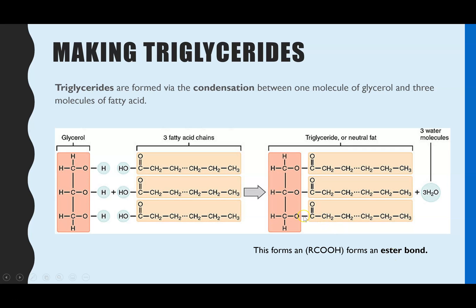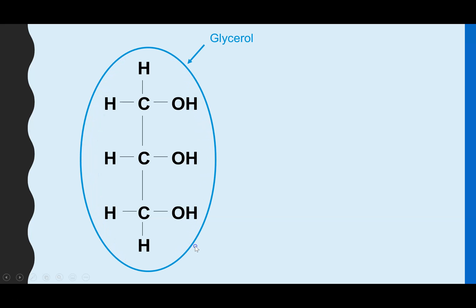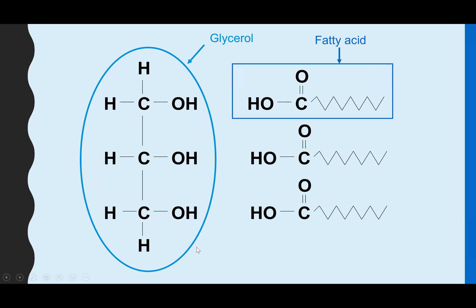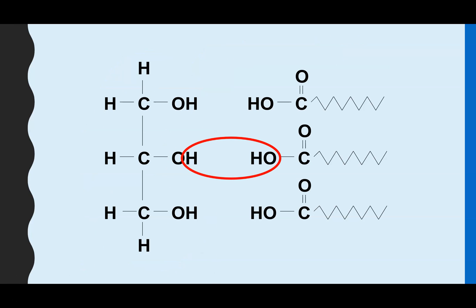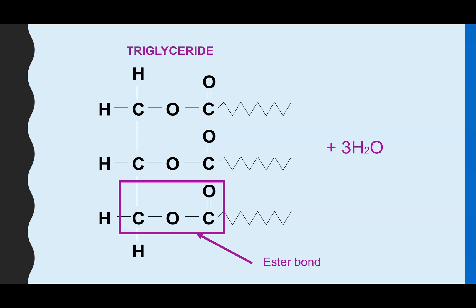The ester bond is this bit just here, where we have our carbon-oxygen bond. So to show that all together: we've got our glycerol and three fatty acid chains. A water molecule is removed — that's why it's a condensation reaction — so three water molecules are actually removed, and we end up with our three ester bonds and three molecules of water.